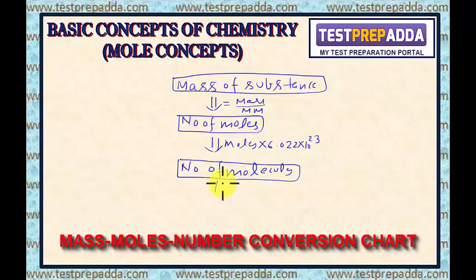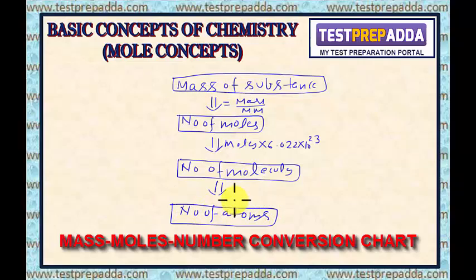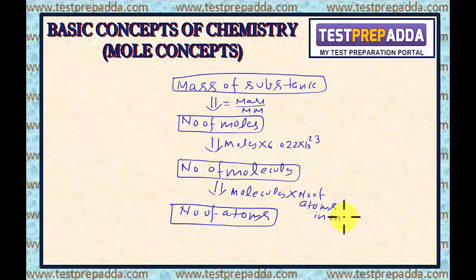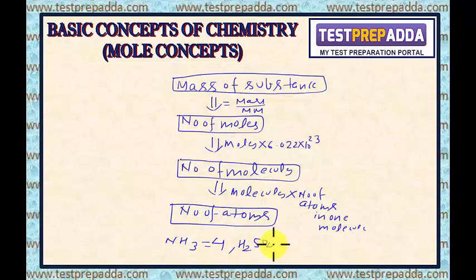Number of molecules can be converted into number of atoms by multiplying by the number of atoms present in one molecule. For example, for NH3 this number is 4 (3 hydrogen + 1 nitrogen). For H2SO4, the number is 7 (2 hydrogen, 1 sulfur, 4 oxygen atoms).